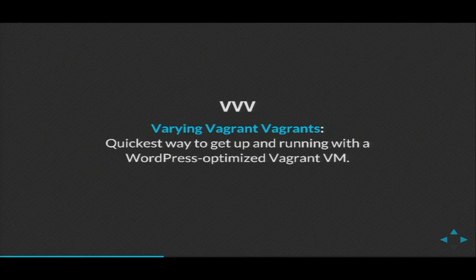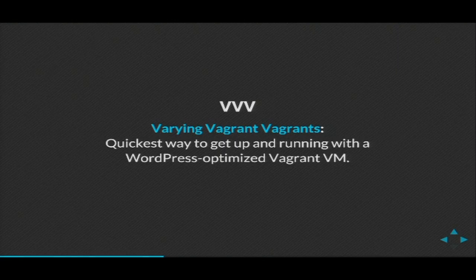If you're brand new to Vagrant, you might want to check out Varying Vagrant Vagrants. This was originally a 10up project, it's available on GitHub, and it's optimized for WordPress development. The plus side is it has everything you will ever need to develop WordPress in a Vagrant that you can git clone and spin up. The downside is it has everything you would ever need and more. But if you're brand new to Vagrant, it gives a good provision file and has a lot of community support.